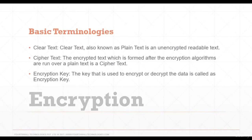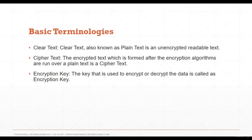Let's look into encryption. Basic terminology: clear text, also known as plain text, is unencrypted readable text. Cipher text is the encrypted text formed after encryption algorithms are run over plain text. An encryption key is the key used to encrypt or decrypt the data.